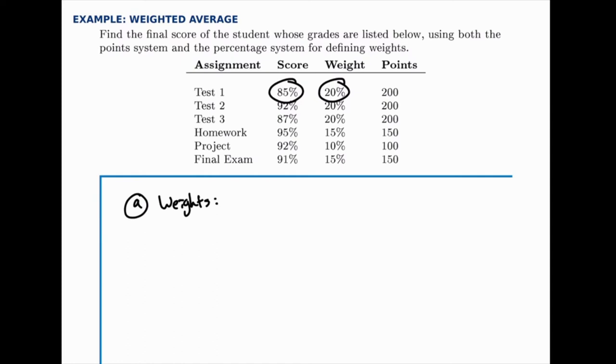So the weights are nice because they're already scaled for us so that just by multiplying the score times the weight and adding those together we'll get the final weighted average.